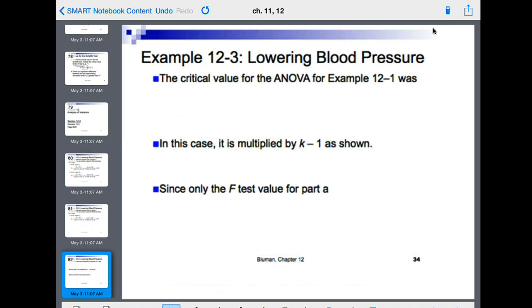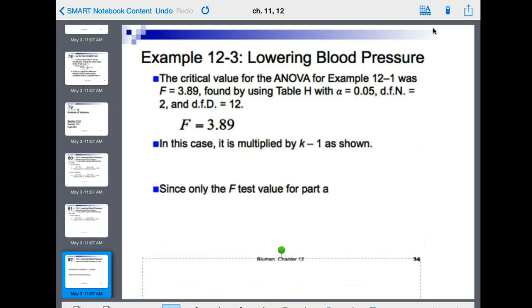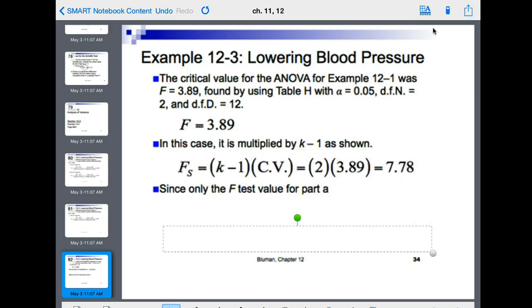So, the critical value for the ANOVA from example 12-1 was F equals 3.89, found by using table H with alpha 0.05, d.f.N equals 2 and d.f.D equals 12. And in this case, we multiply that by K minus 1, so it will be 3 minus 1, which is 2. So our critical value is 7.78.